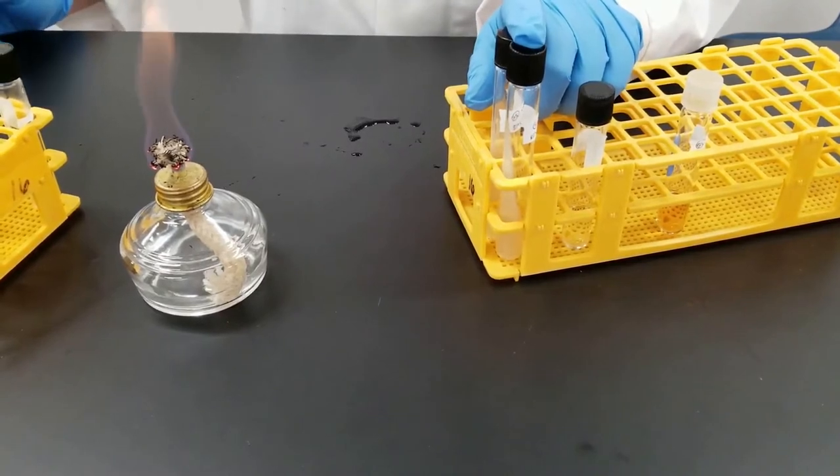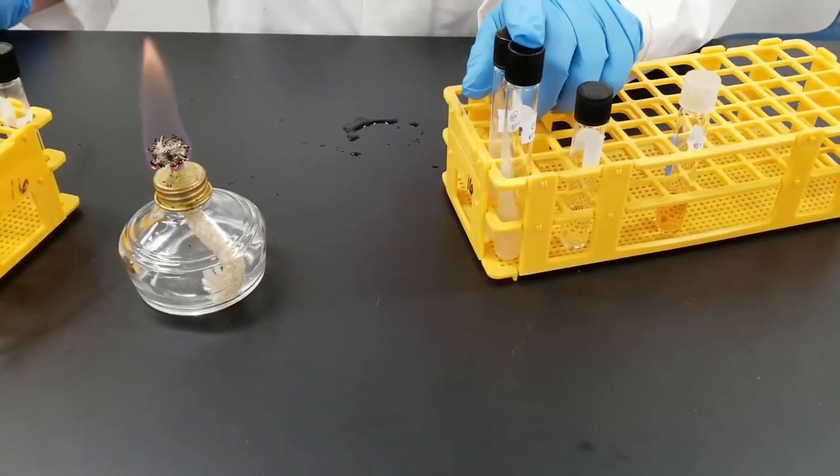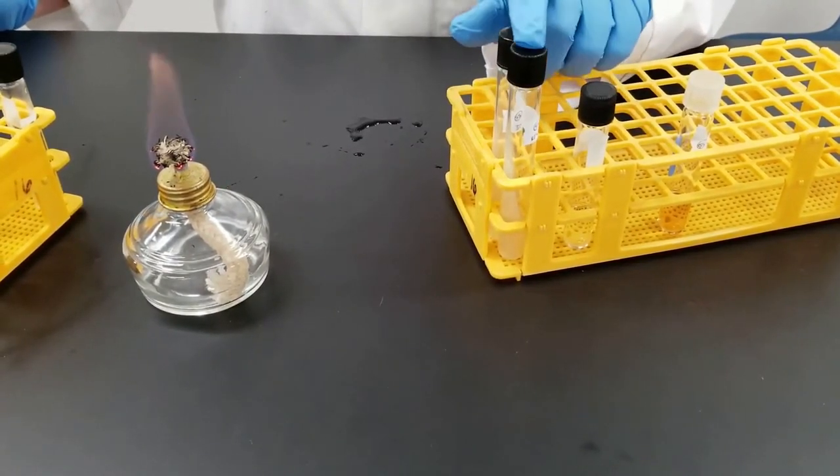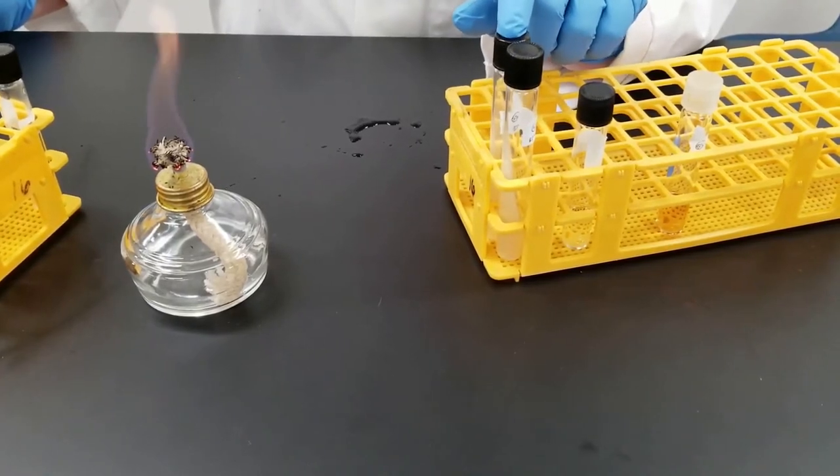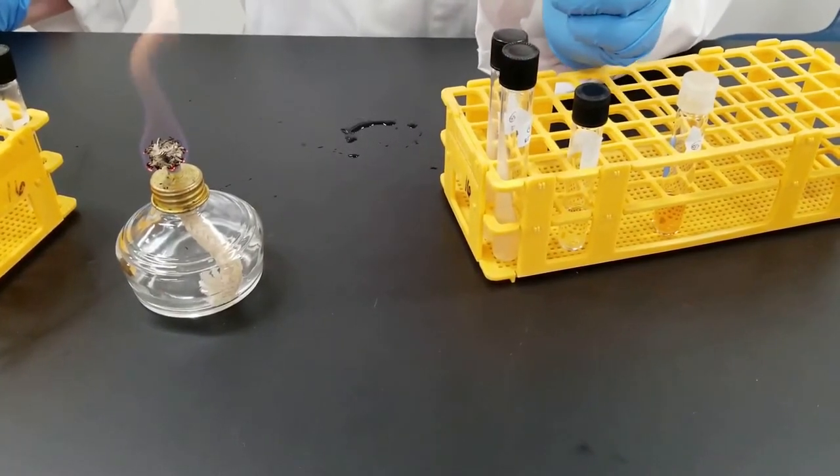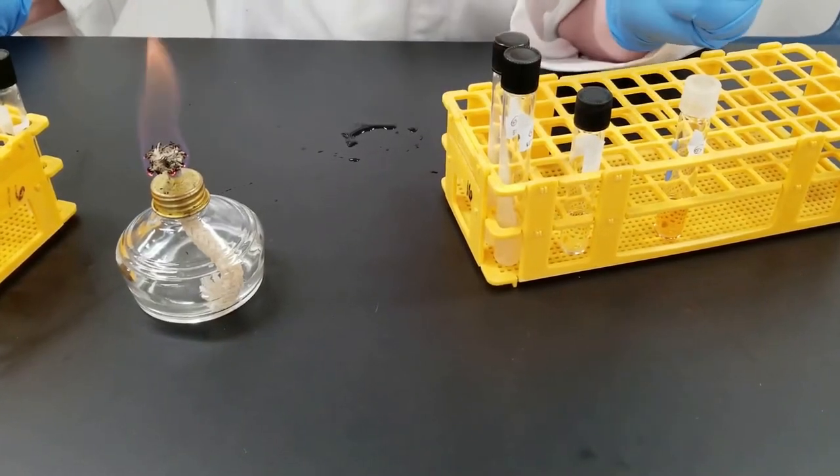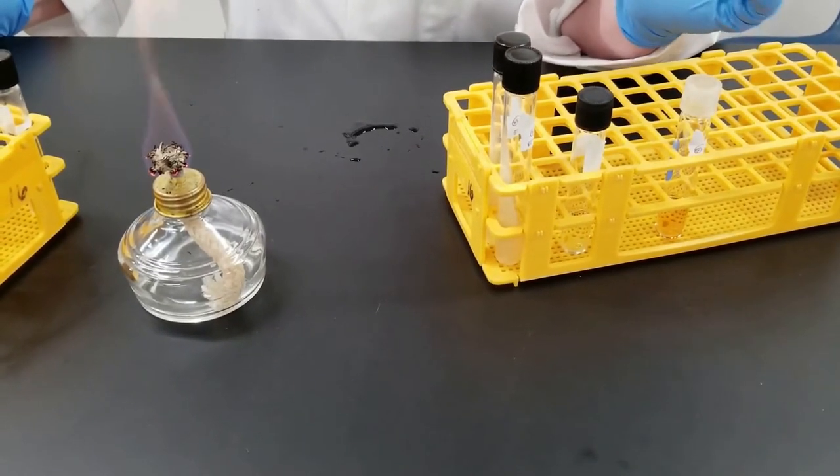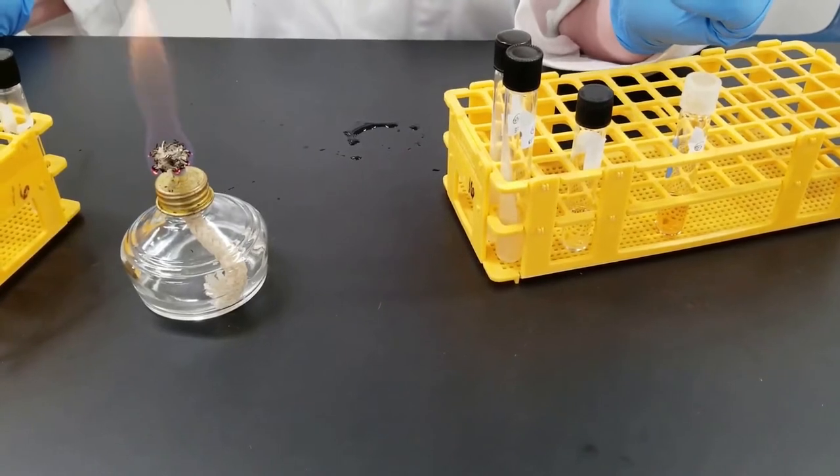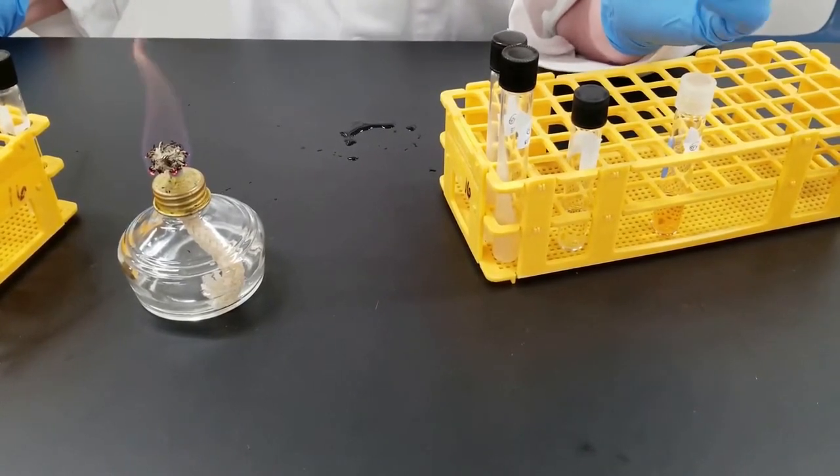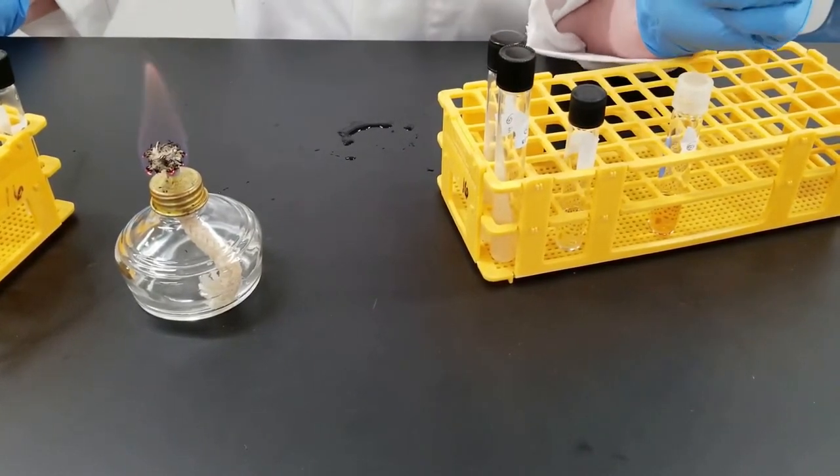We're going to be overall in this experiment looking at growth characteristics. So we'll see in this way, is one temperature better suited or more of the optimum temperature? Will you get better growth than the other? So we'll do 37 and room temperature, which is roughly anywhere from 21 to 23 degrees Celsius.